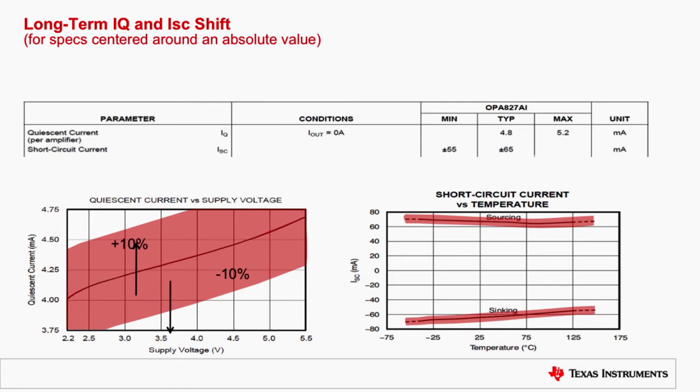Likewise, in case of short circuit current versus temperature, this band represents the ±10% variation from its typical value.